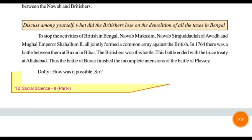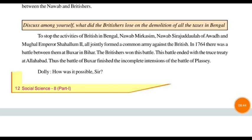Mir Qasim made things very strict so no British could do corruptions or collect taxes wrongly. But Mir Qasim alone could not stop them. So he called together the previous Nawabs — including those like Siraj ud-Daulah — and Mughal Emperor Shah Alam too. They jointly formed a common army against the British, because the British always had great techniques and weapons to beat any army.